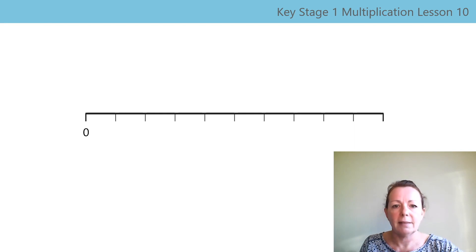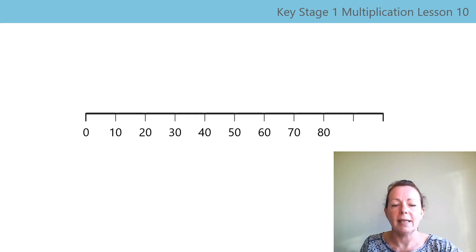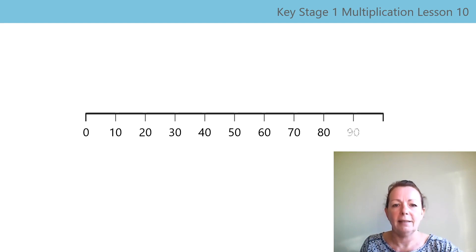Zero, ten, twenty, thirty, forty, fifty, sixty, seventy, eighty, ninety, one hundred. One hundred, ninety, eighty, seventy, sixty, fifty, forty, thirty, twenty, ten, zero.